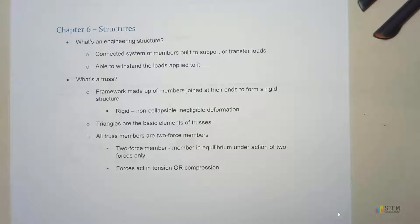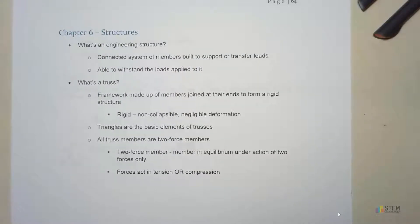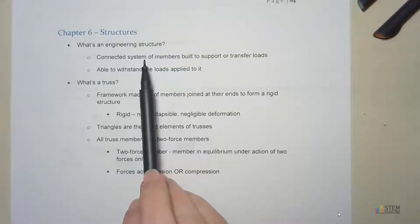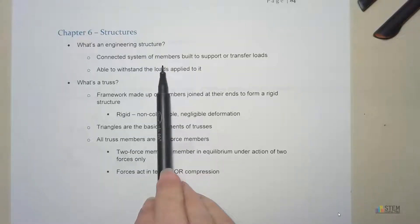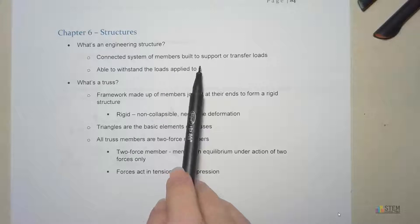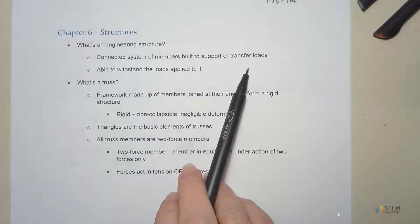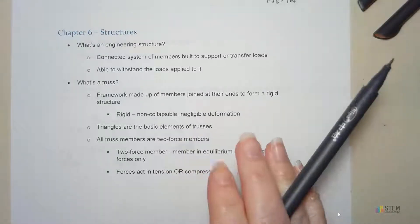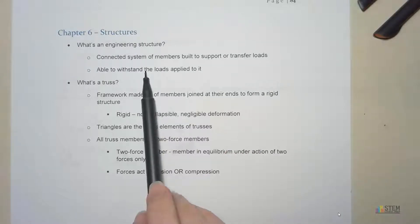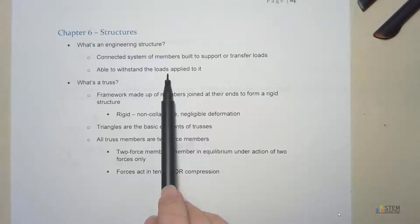So let's first go over what exactly is an engineering structure. Essentially what it is, it's just going to be a connected system of members that are built to support or transfer loads. That's all it is. And the key thing here is it's got to be able to withstand the loads that are applied to it.